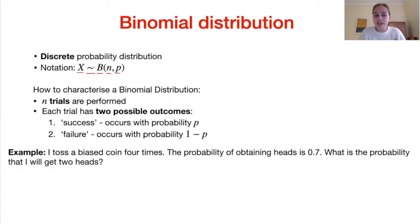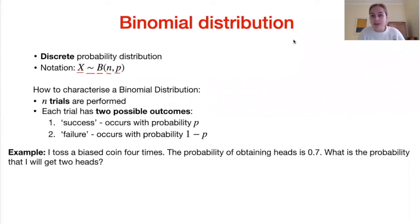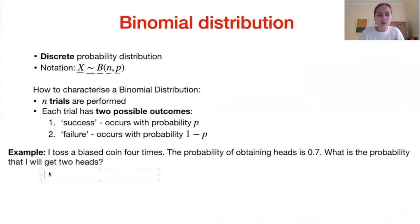For example: I toss a biased coin four times; the probability of obtaining a head is 0.7. What is the probability of getting exactly two heads? Before using any formula, let's reason through the problem. The possible outcomes giving two heads are: heads-heads-tails-tails, tails-tails-heads-heads, heads-tails-tails-heads, tails-heads-heads-tails, and so on.